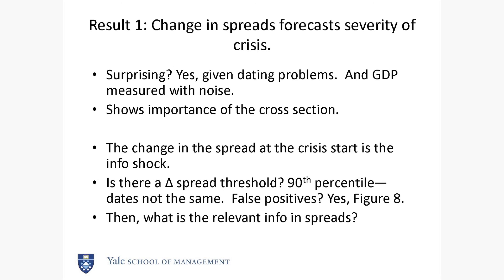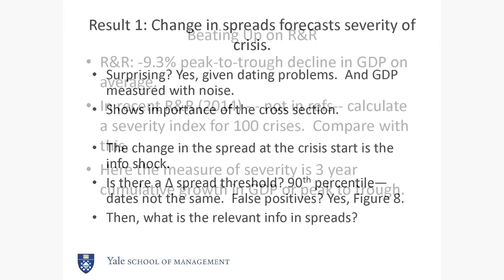The change in spreads forecasts the severity of crisis. In my work, the information shock forecast the severity. I find this result very compelling — it's power from the cross-section, even though all the data is measured with noise. We don't know what this change in the spread corresponds to. Arvind wants to interpret it as information about losses — something I'll come back to. There are false positives shown in figure eight: even when you refine your definition of a spread crisis, it doesn't line up exactly, because the spread is more complicated than just getting the information.